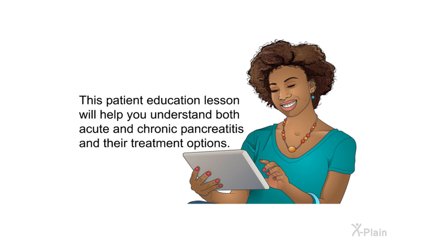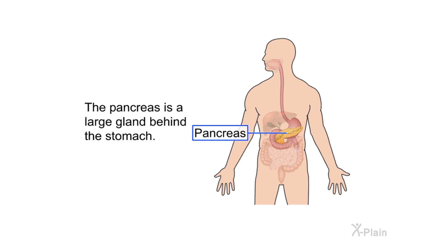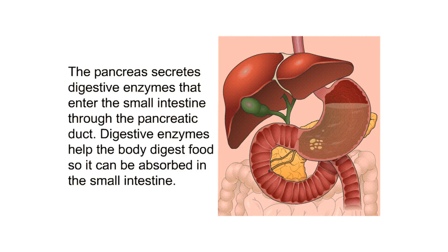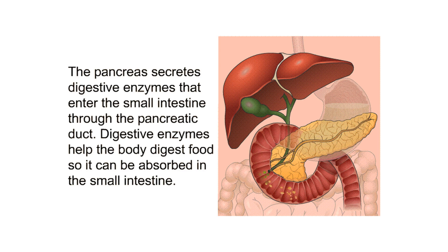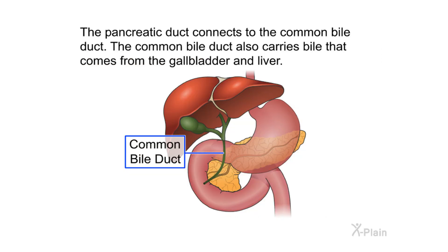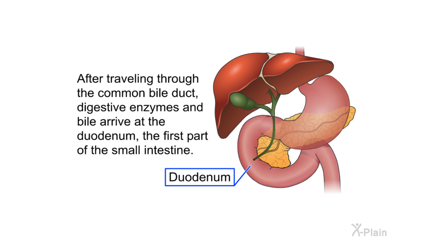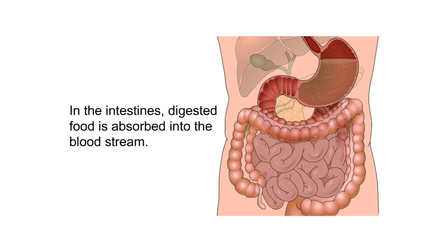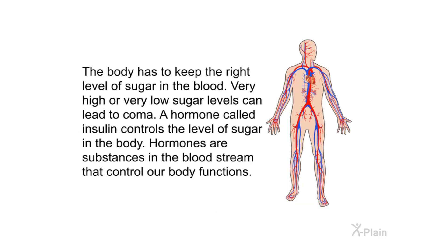The pancreas is a large gland behind the stomach. The pancreas secretes digestive enzymes that enter the small intestine through the pancreatic duct. Digestive enzymes help the body digest food so it can be absorbed in the small intestine. The pancreatic duct connects to the common bile duct, which also carries bile from the gallbladder and liver. After traveling through the common bile duct, digestive enzymes and bile arrive at the duodenum, the first part of the small intestine.